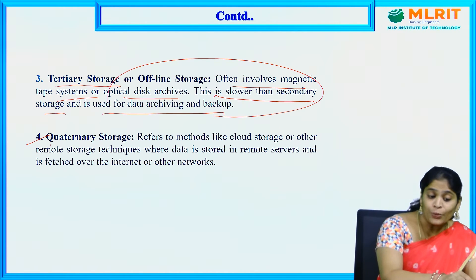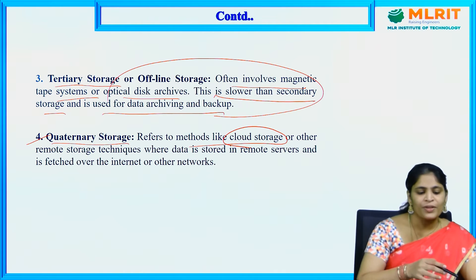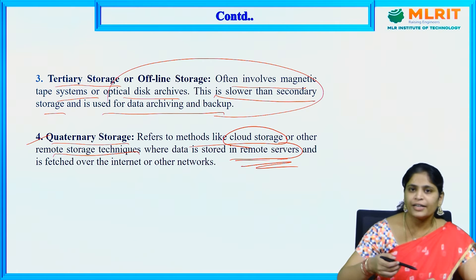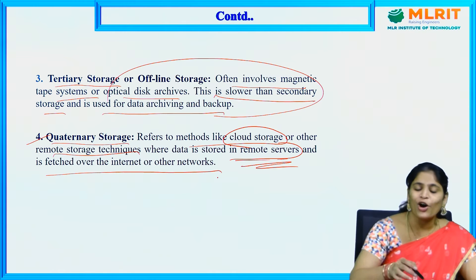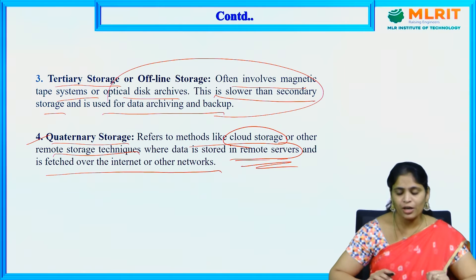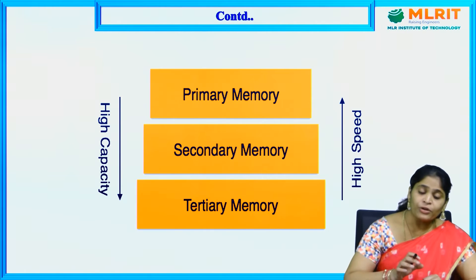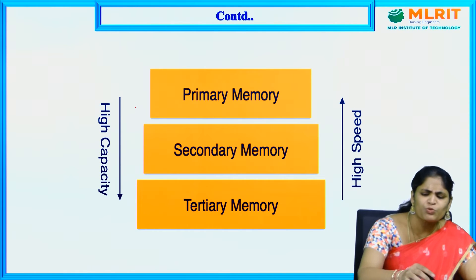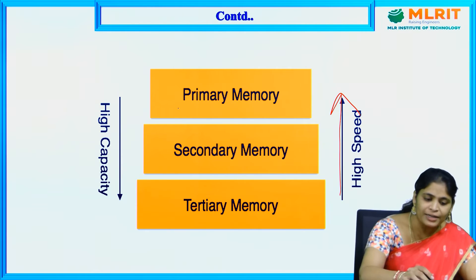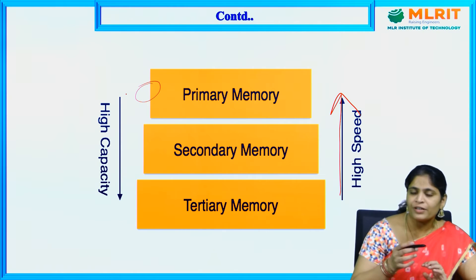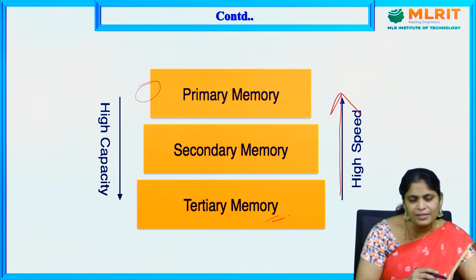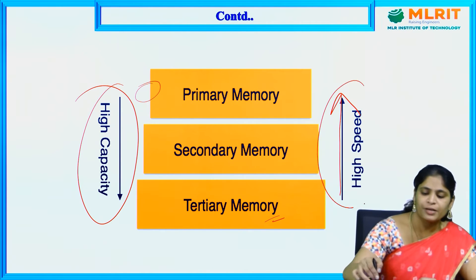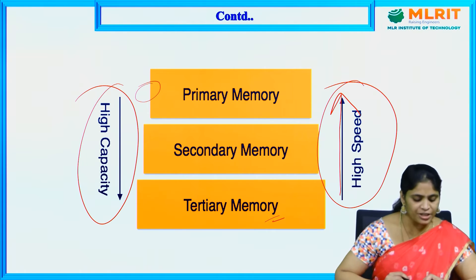The last one is quaternary storage, which refers to methods like cloud storage or other remote storage techniques where data is stored in remote servers. Data is stored in remote servers and we can access it online through the internet. Now, in terms of speed and capacity: primary memory is very much faster in processing speed but has very low storage capacity. Secondary memory is faster than tertiary memory and has more capacity than primary memory.